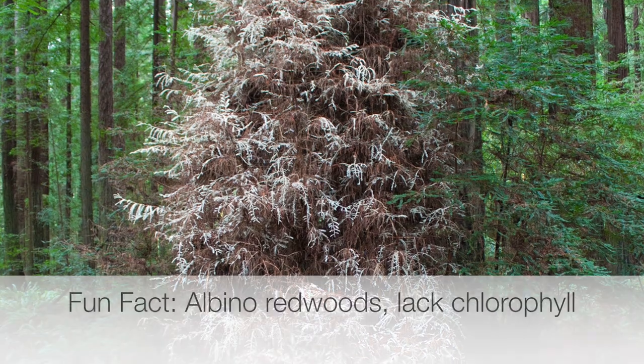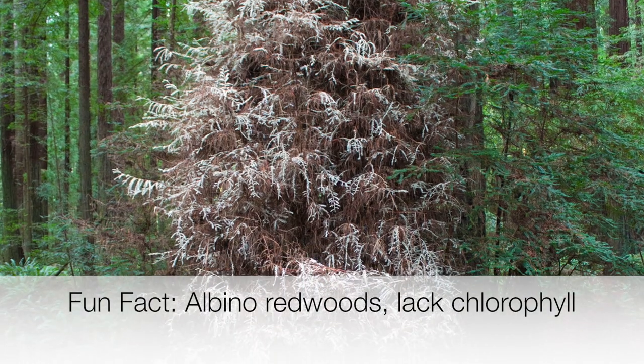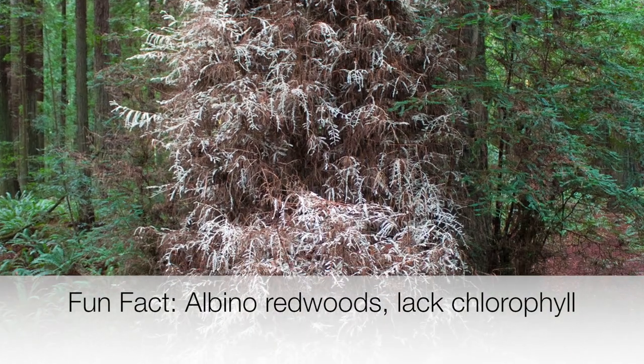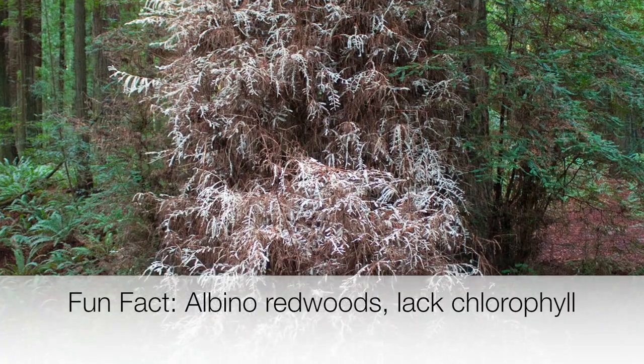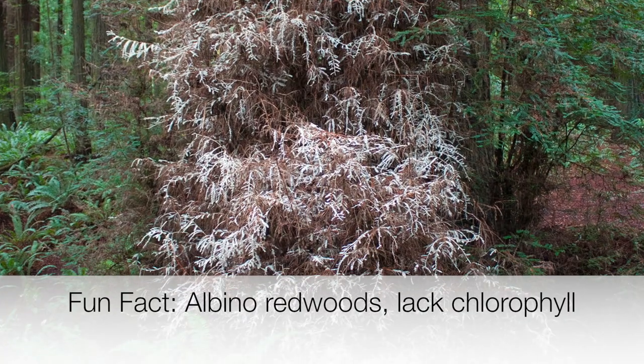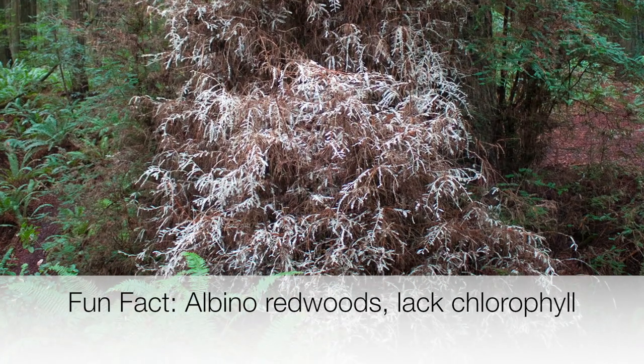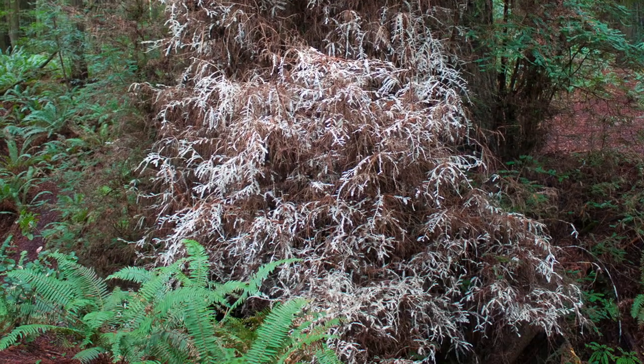Here's a fun fact. There are about 400 known albino redwoods. These trees lack chlorophyll and get their nutrients from their neighbors.